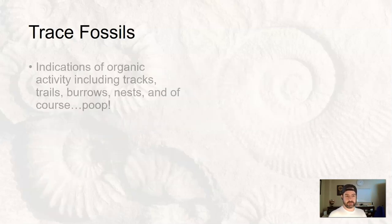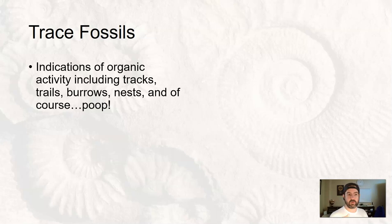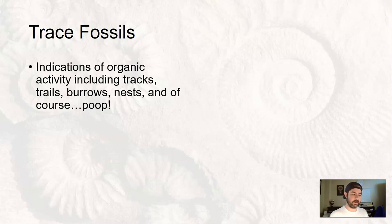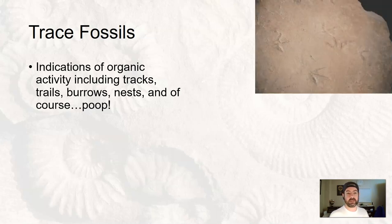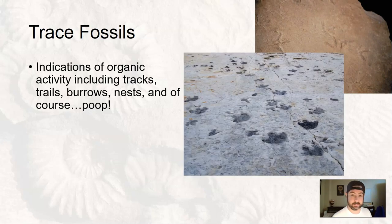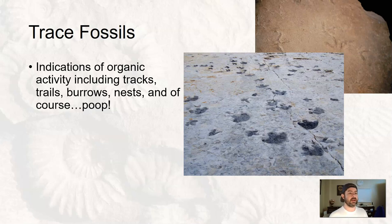A trace fossil is an indication of organic activity. It's not the animal or plant themselves — mostly animal in this case — but it is some sort of indication that there was a living organism there based on activity like tracks that we might find, whether they're ancient birds or ancient dinosaur tracks. There are a number of ancient dinosaur tracks in Arizona, Utah, and Colorado.